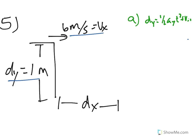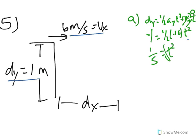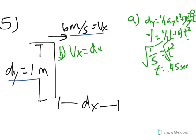Remember that with projectiles fired horizontally, the initial velocity in the y is zero, so we're left with 1 equals one half times negative 10 times t squared. This is supposed to be negative because it's going down. We divide and get 1 divided by 5 equals t squared, take the square root, and t is equal to 0.45 seconds. Then we plug that back into vx equals dx over t to find part B: 6 equals dx over 0.45, and we get dx is equal to 2.7 meters.